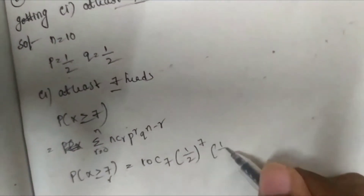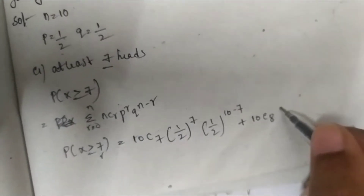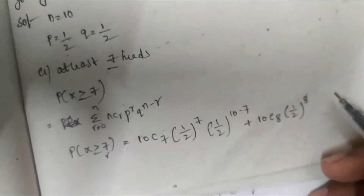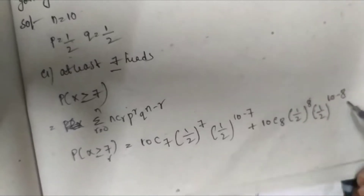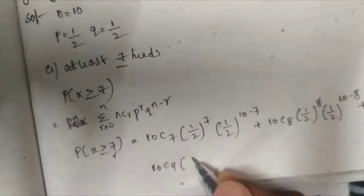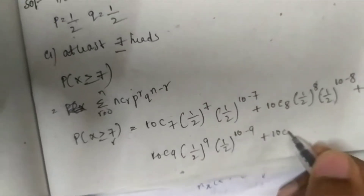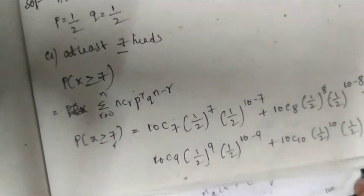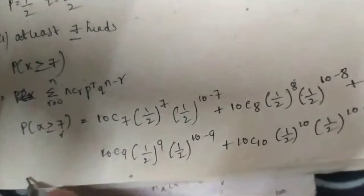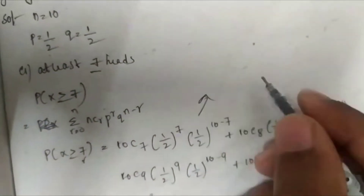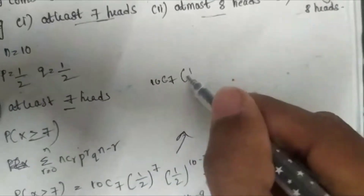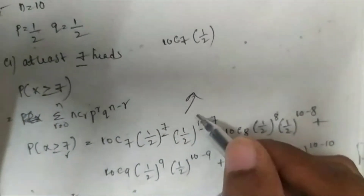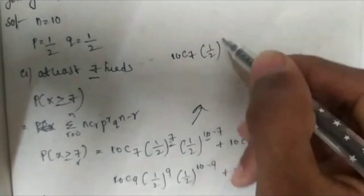So we expand: 10C7 * (1/2)^7 * (1/2)^(10-7) + 10C8 * (1/2)^8 * (1/2)^(10-8) + 10C9 * (1/2)^9 * (1/2)^(10-9) + 10C10 * (1/2)^10 * (1/2)^(10-10). Since we add the powers (e.g. 7+3=10), each term becomes nCr * (1/2)^10.